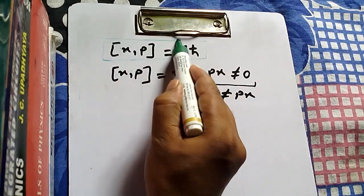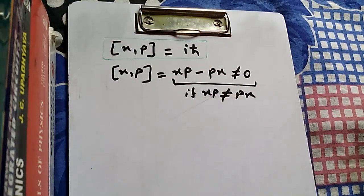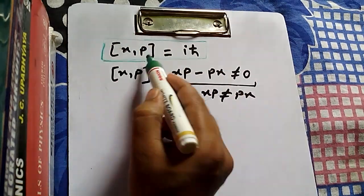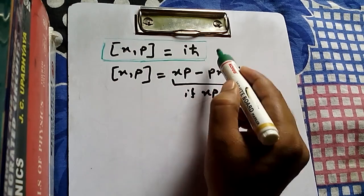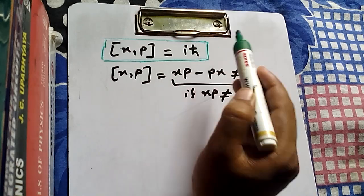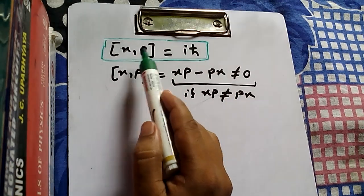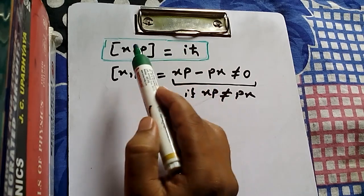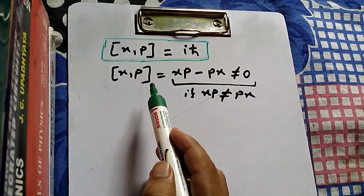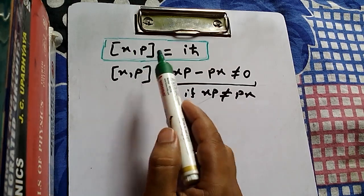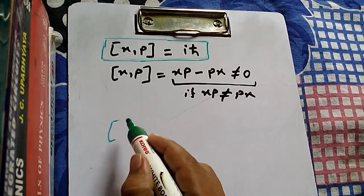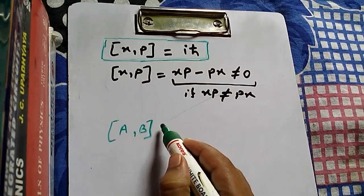So what do we know about the commutation of X and P? It gives us a nonzero value. What can you say about that? We can see that the commutation of X and P gives us a nonzero value, which means that position and momentum do not commute with each other.